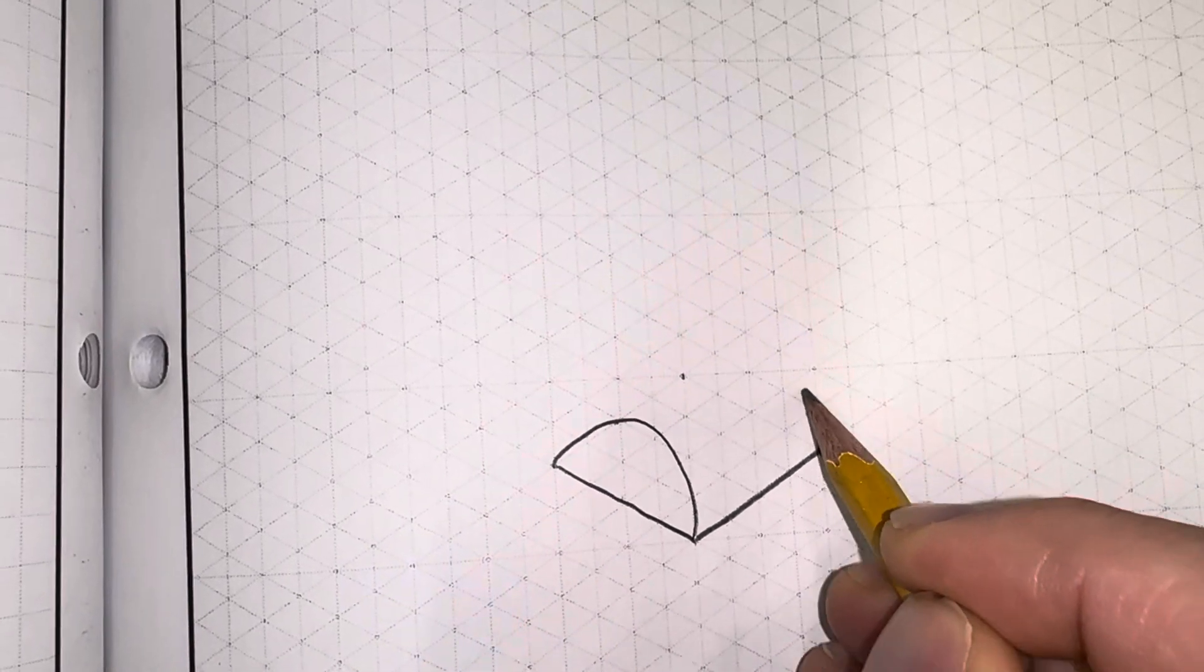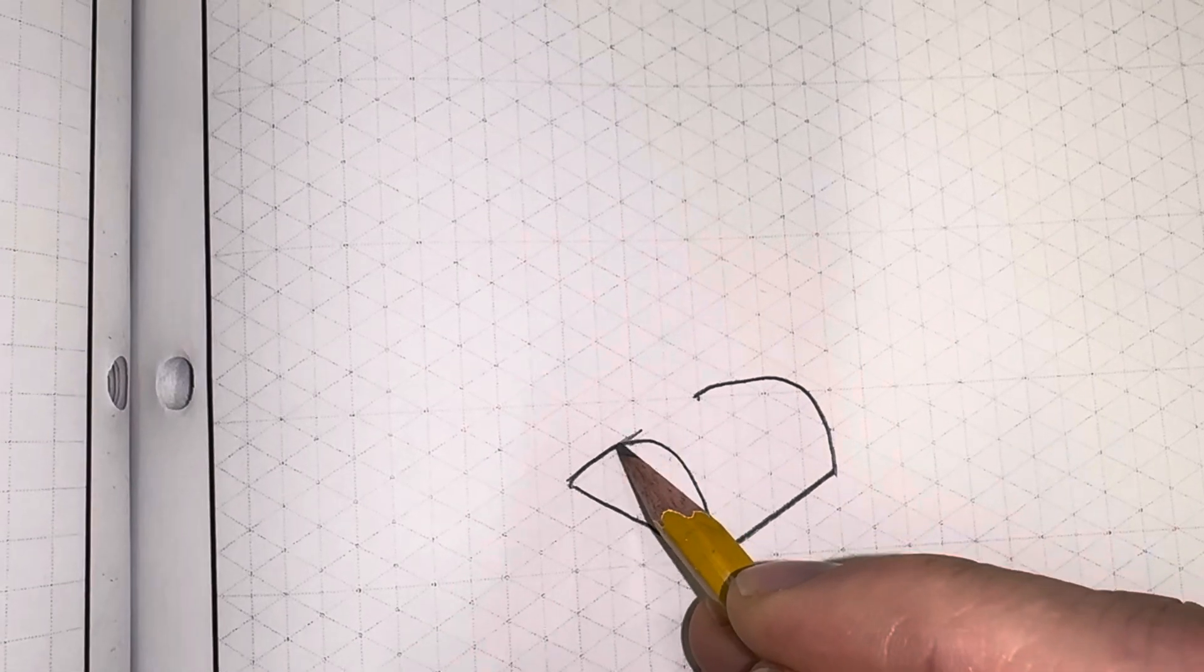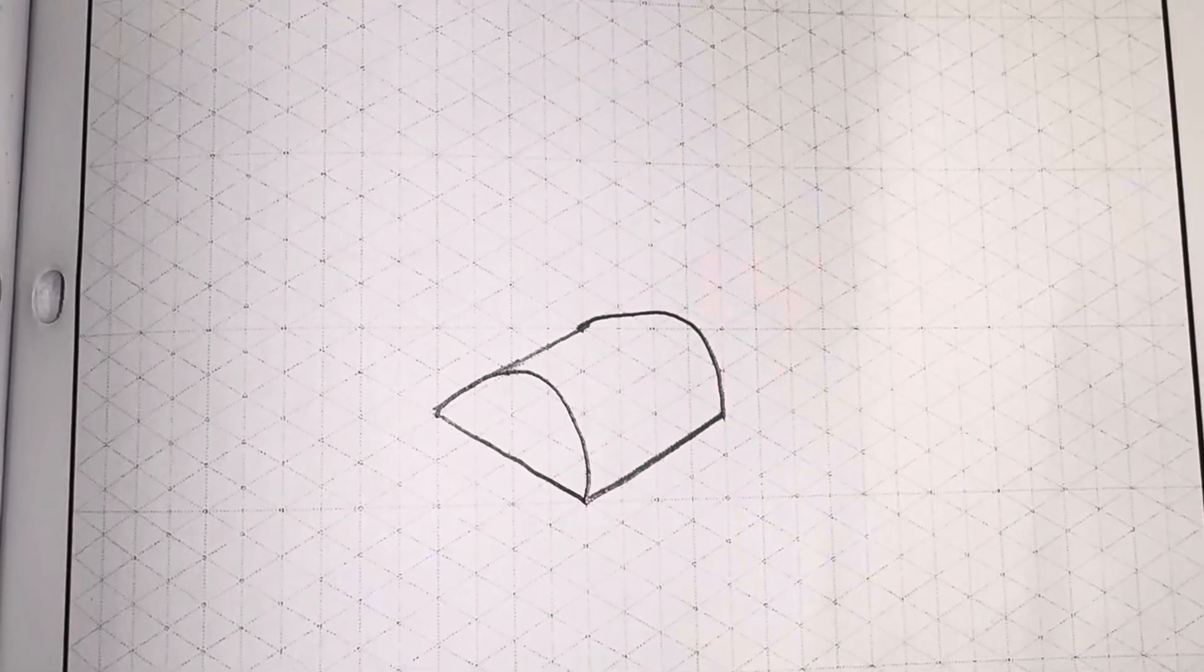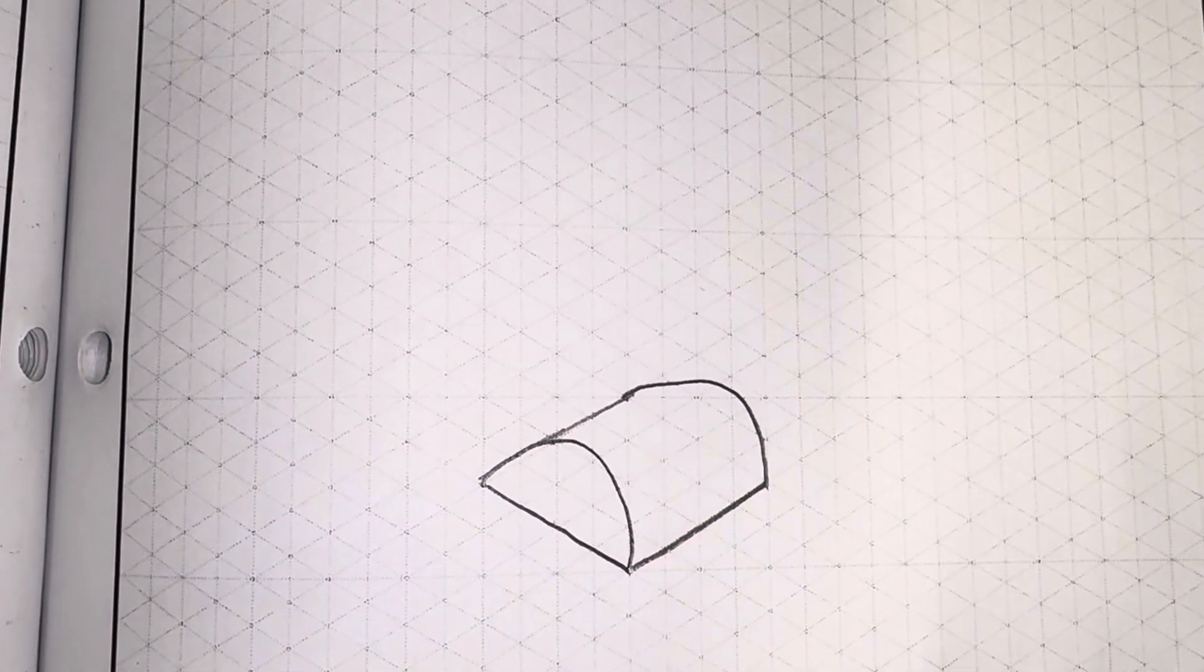I'm going to try to match that same curve coming on the back side here. Then I can just use this line and connect, and I end up with an isometric cylinder. I would have flattened that out a little bit more.